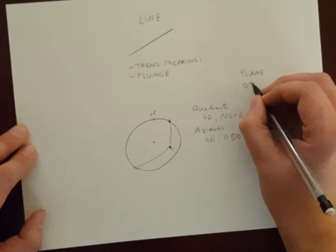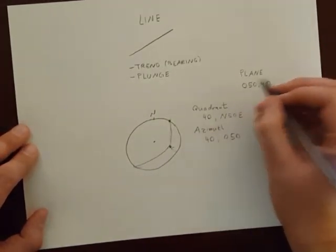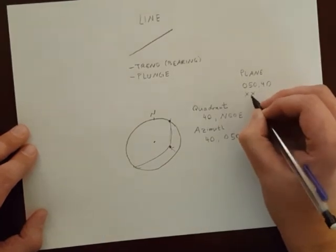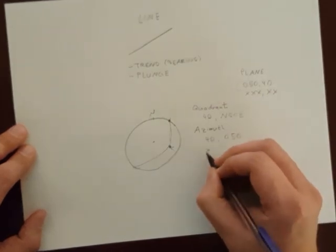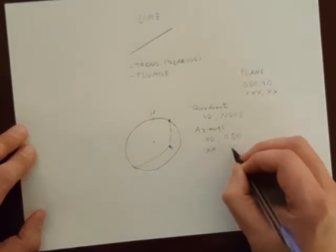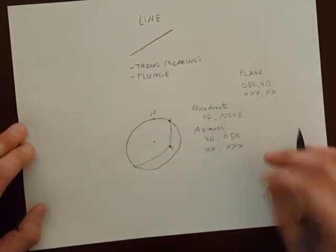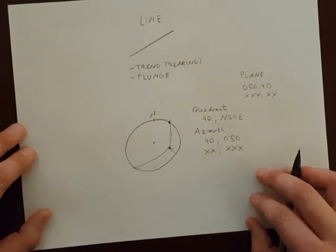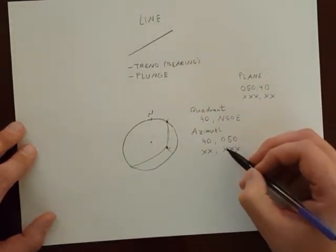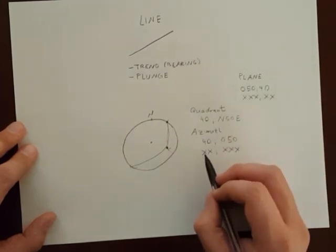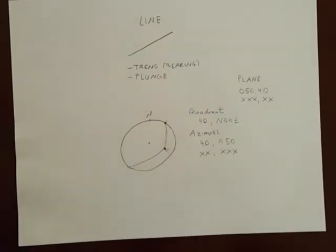Now also notice that for a plane I wrote down the attitude of a plane like this. Notice how I have three digits, two digits for a plane, whereas here I have two digits, three digits for a line. This is just a way for me to record and read these attitudes and understand quickly if I'm reading information about a plane or a line, if I'm looking at a plunge and a trend or a strike and a dip.